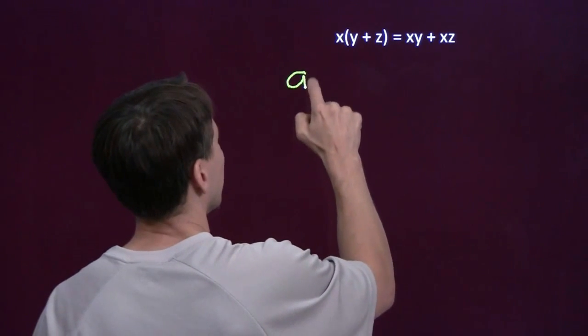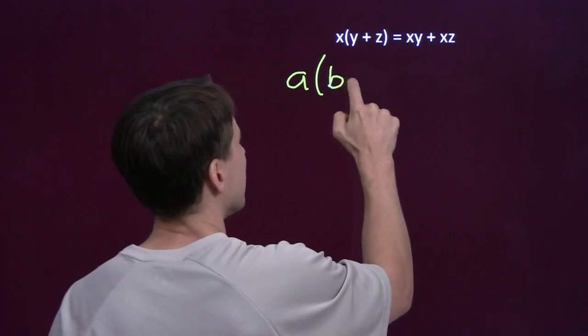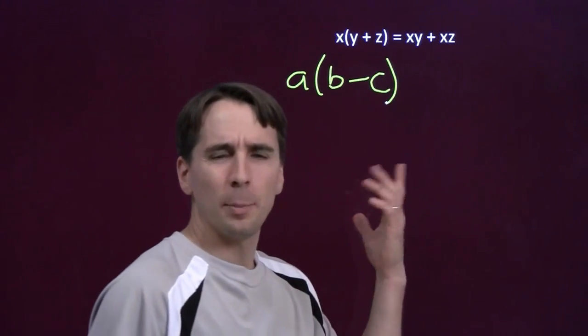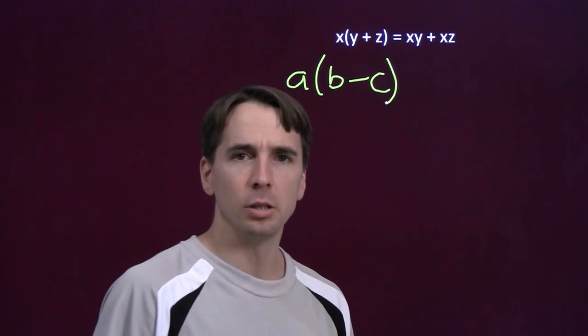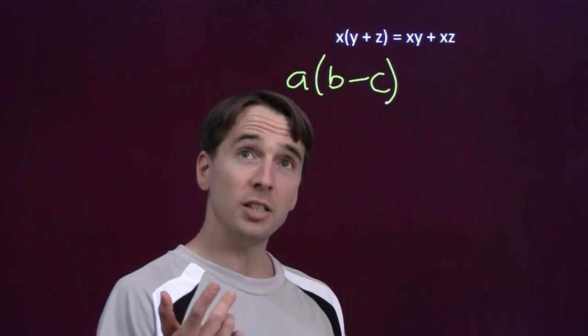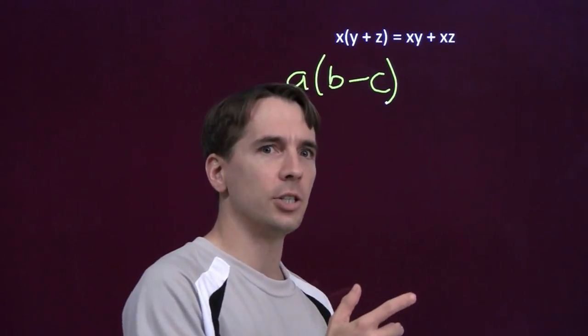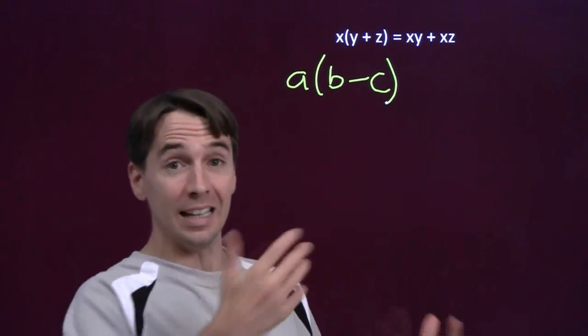If I start off with something like a times b minus c, well, the distributive property doesn't tell me anything about subtraction. It just tells me about addition. But subtraction is the addition of a negation. I can turn my subtraction into an addition.